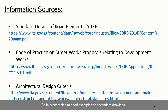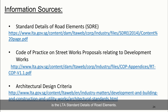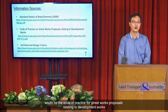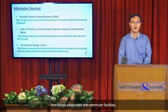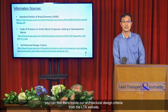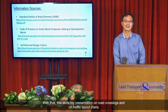To find good examples and standard drawings, there are some useful references available on our website. A very important document is the LTA Standard Details of Road Elements. Another important document for new roads and infrastructure related to development is the Code of Practice for Street Works Proposal Relating to Development Works. For commuter facilities and architectural design criteria, these can be found in the Architectural Design Criteria from the LTA website. That ends my presentation on road crossings and traffic layout plans. Thank you for your time.